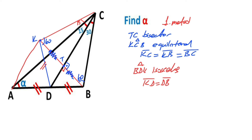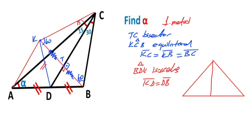And then if we connect point K and point A — recall that if these three parts are equal, that means the vertex angle must equal 90 degrees. So angle AKB equals 90 degrees. For this triangle, we know that the sum of interior angles equals 180 degrees, so that means 15 degrees are left here.